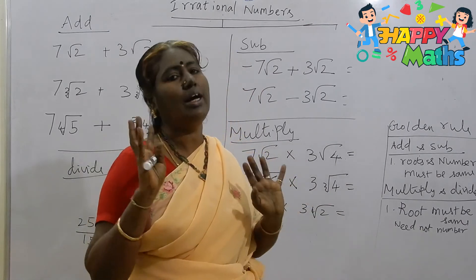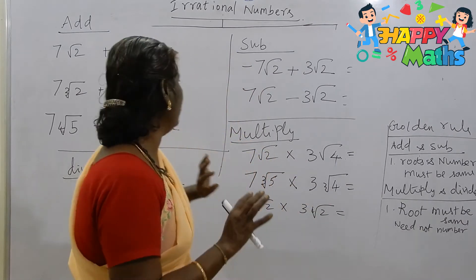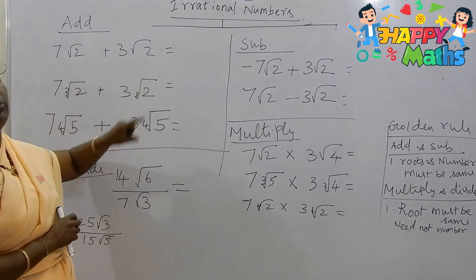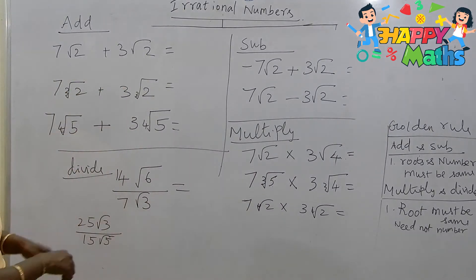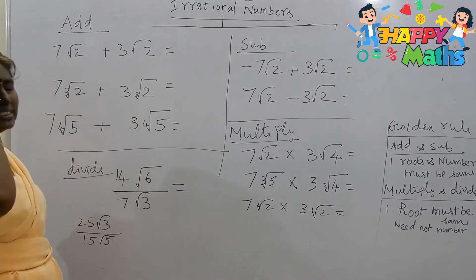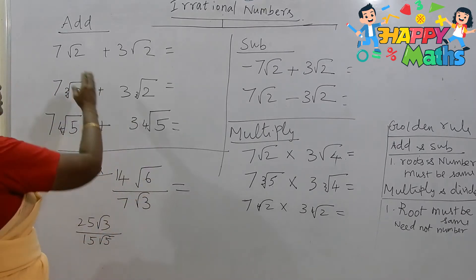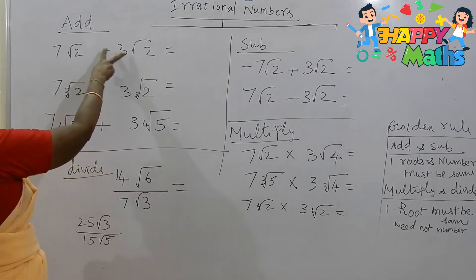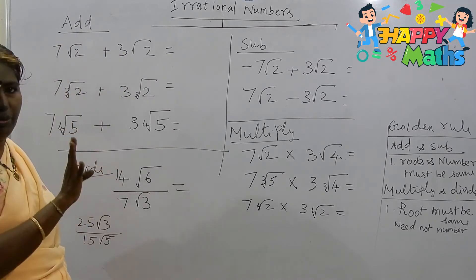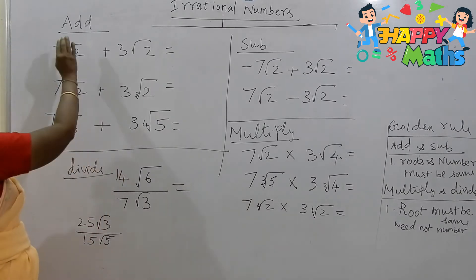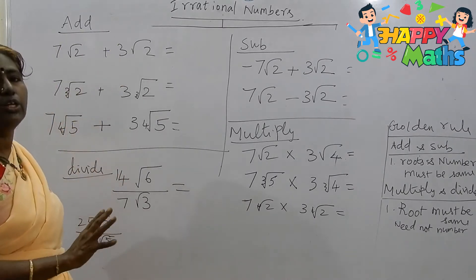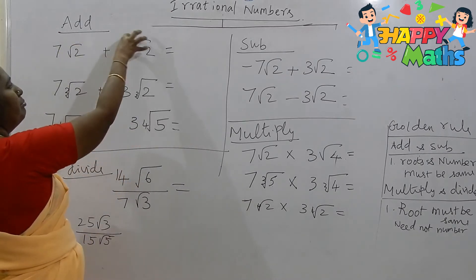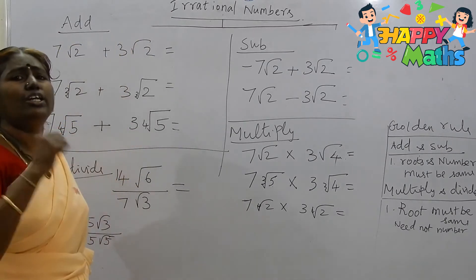See, this is 7 root 2 plus 3 root 2. As I told you earlier, the root — just think of this as a jail. The 2 is in this square root jail. Both are in the same jail. For addition and subtraction, you must think in your mind: this irrational number is just like a donkey.